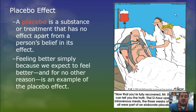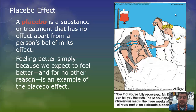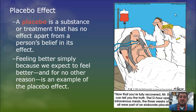The placebo is a substance that might be given to the control group that has no effect. If it's a medicine being tested, it might be a sugar pill. Believe it or not, these people will feel better because they believe they are receiving medicine and they believe it should be helping them. Feeling better simply because we expect to feel better is an example of the placebo effect, and that must be accounted for in controlled experiments.